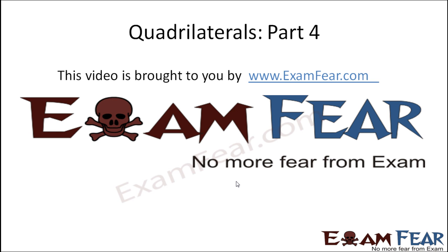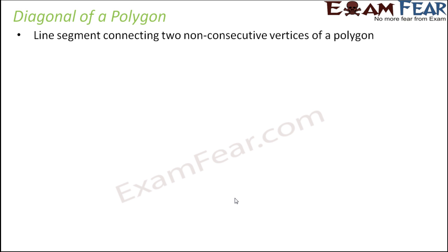Hello friends, this video on quadrilaterals part 4 is brought to you by examfear.com — no more fear from exam. Now in terms of a polygon, every polygon has a very important parameter which is called a diagonal. A diagonal is a line segment that connects two non-consecutive vertices of a polygon.